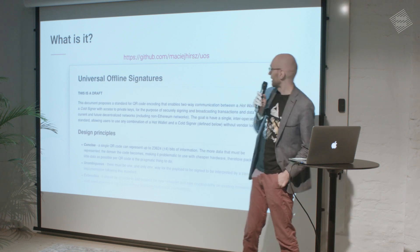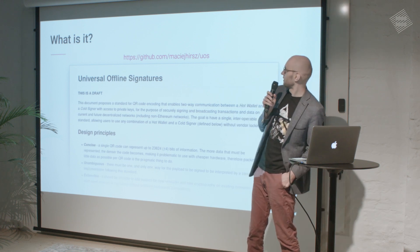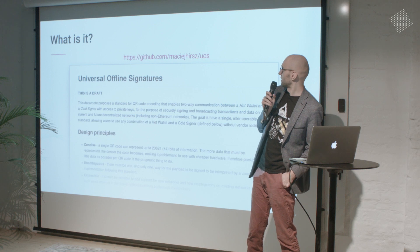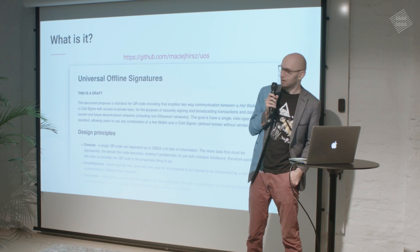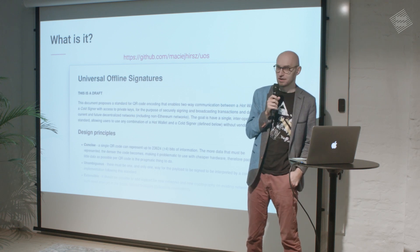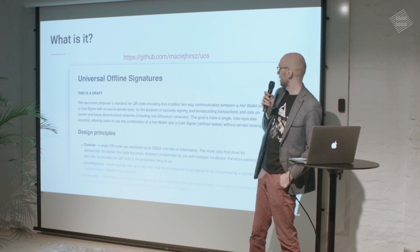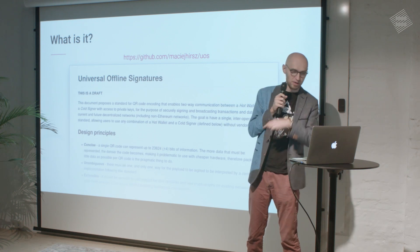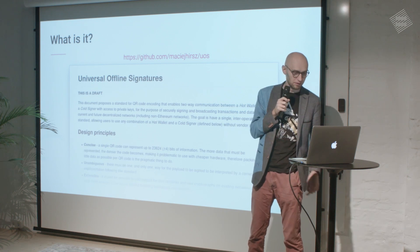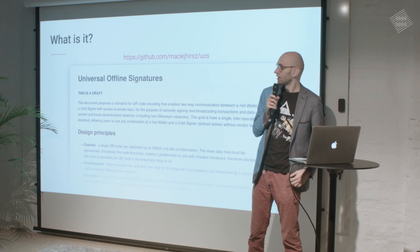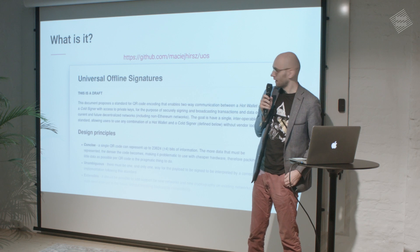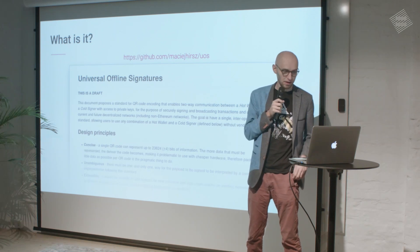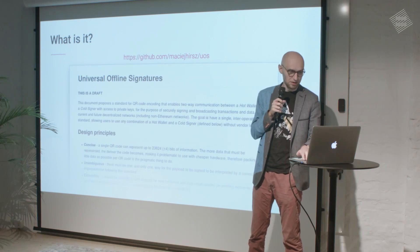So he bought the JSON.org domain, put the specs there, told people it was a standard, and somehow people believed him. This is kind of my attempt at doing that. I don't have a domain yet — I should probably buy one. But back in March this year, I basically wrote this markdown document. The link will be at the end, so we don't have to copy it now.